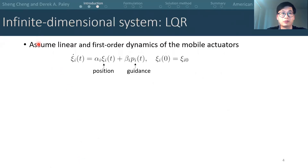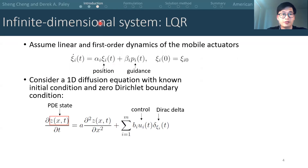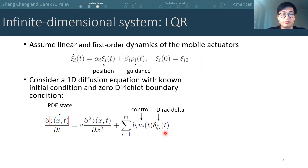Let's start with the setting of the problem. First, we assume linear dynamics of the mobile actuators. Here, C denotes the position of an agent and P denotes the guidance. The subscript i indicates the index of an agent. The spatial temporal process varies both in space and time. We choose a diffusion equation to model this process. Consider a one-dimensional diffusion equation with pointwise control implemented by the mobile actuators. Here, Z of x and t is the PDE state, which can be considered as the temperature or concentration. The last term characterizes that the control u of agent i impacts the diffusion process in a pointwise manner through the Dirac delta function.